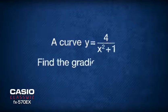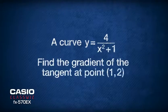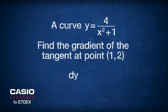Here's the question: Given the equation of a curve y = 4/(x²+1), find the gradient of the tangent at point (1,2). To find the gradient of the tangent, we have to differentiate the equation to find dy/dx.